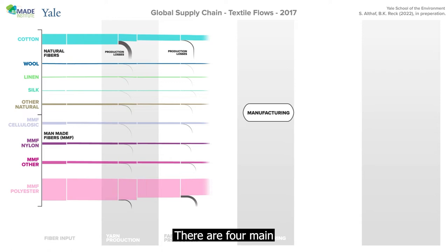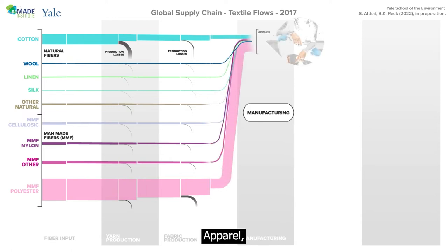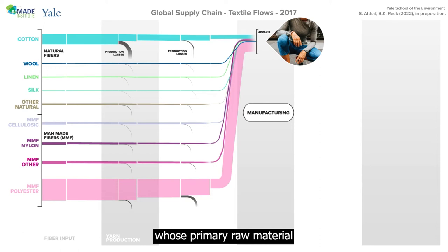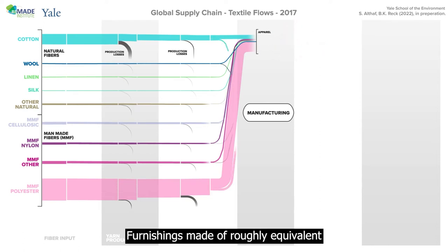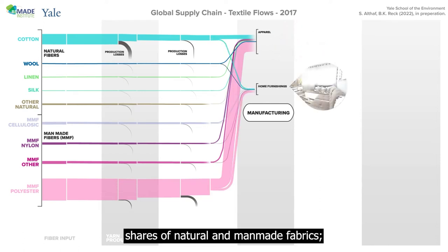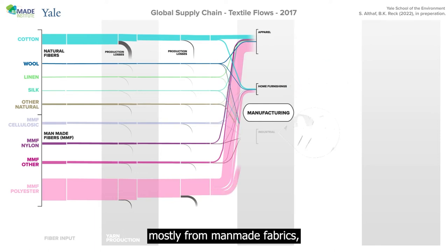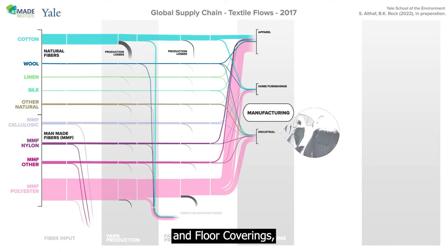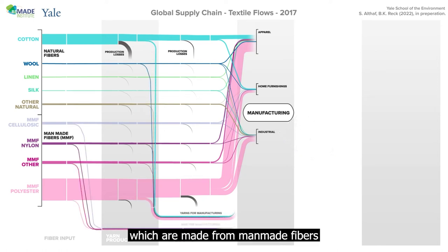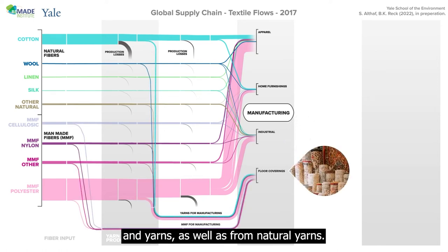There are 4 main types of final products: apparel, the largest sector whose primary raw material is polyester; home furnishings, made of roughly equivalent shares of natural and manmade fabrics; industrial applications, made mostly from manmade fabrics; and floor coverings, which are made from manmade fibers and yarns as well as from natural yarns.